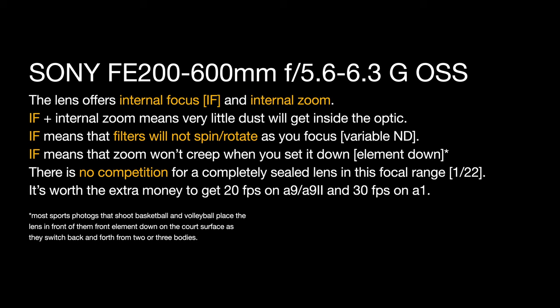There is no competition right now for a completely sealed lens in this focal length range that will fit on a Sony camera, even with adapters. This video was recorded in January of 2022, so that could change in the future. But in my opinion, it's worth the extra money to get 20 frames per second on the A9 and A9 II, and a full 30 frames per second on the Alpha 1 with the 200-600G. Remember that aftermarket lenses do not allow you to get the fastest frame-per-second rates on these cameras — you may only get 10 frames a second or less.